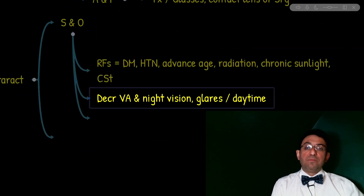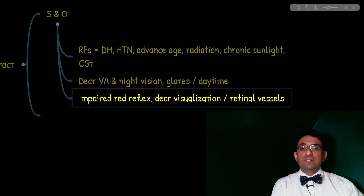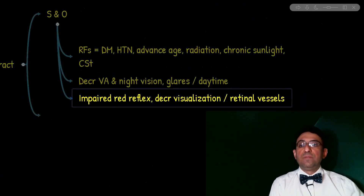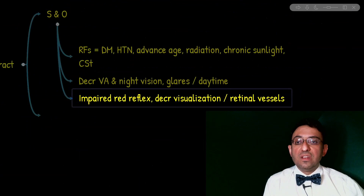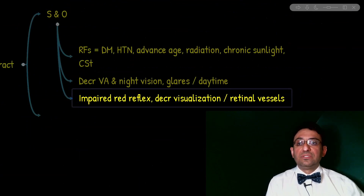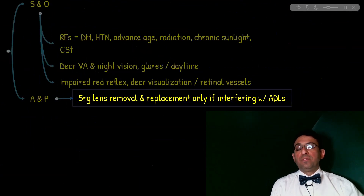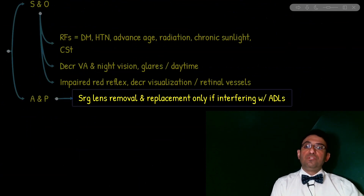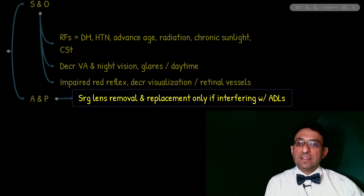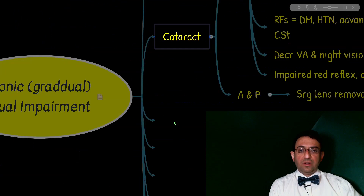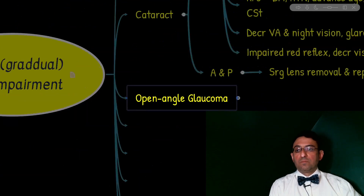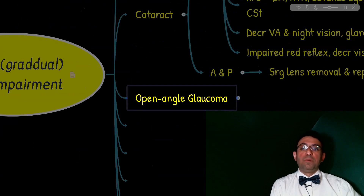Physical exam findings hinting in favor of cataract include impaired red reflex and decreased visualization of retinal vessels. Surgical management — lens removal and replacement — is only indicated if the cataract interferes with activities of daily living. We will discuss glaucoma, both acute and chronic (acute angle closure versus open-angle glaucoma), in a dedicated episode.